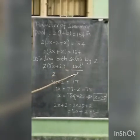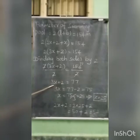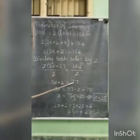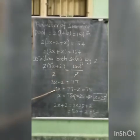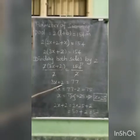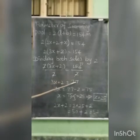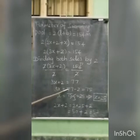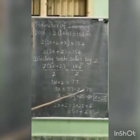We have 3x plus 2 equal to 77. The variable term is the first term and the constant term is transposed to the right-hand side. So, 3x equals 77 minus 2. 77 minus 2 is 75.